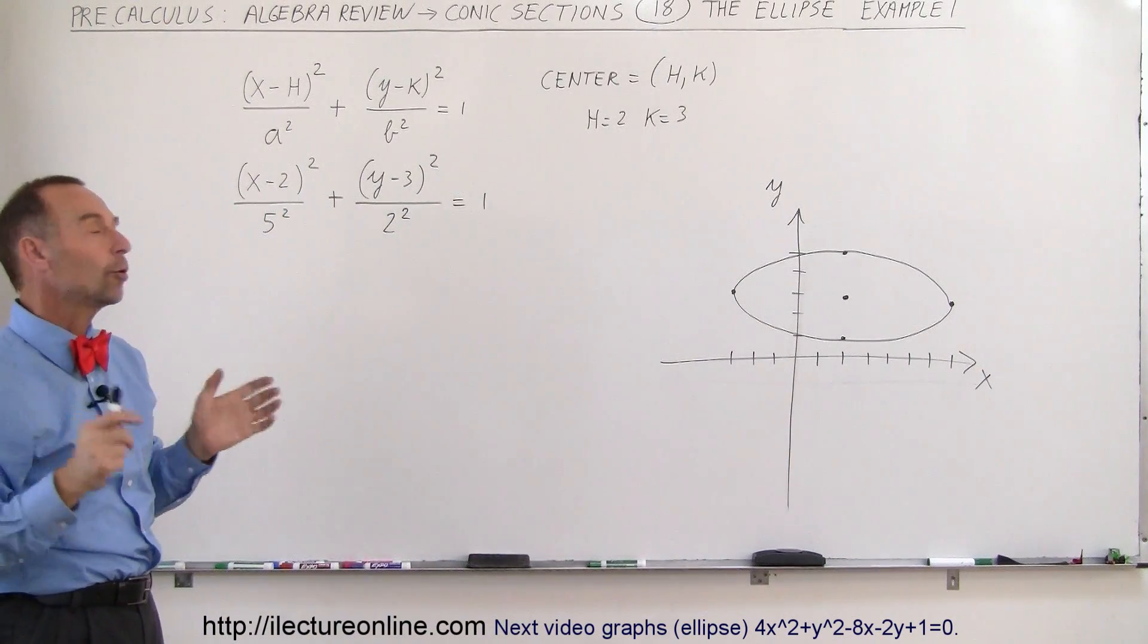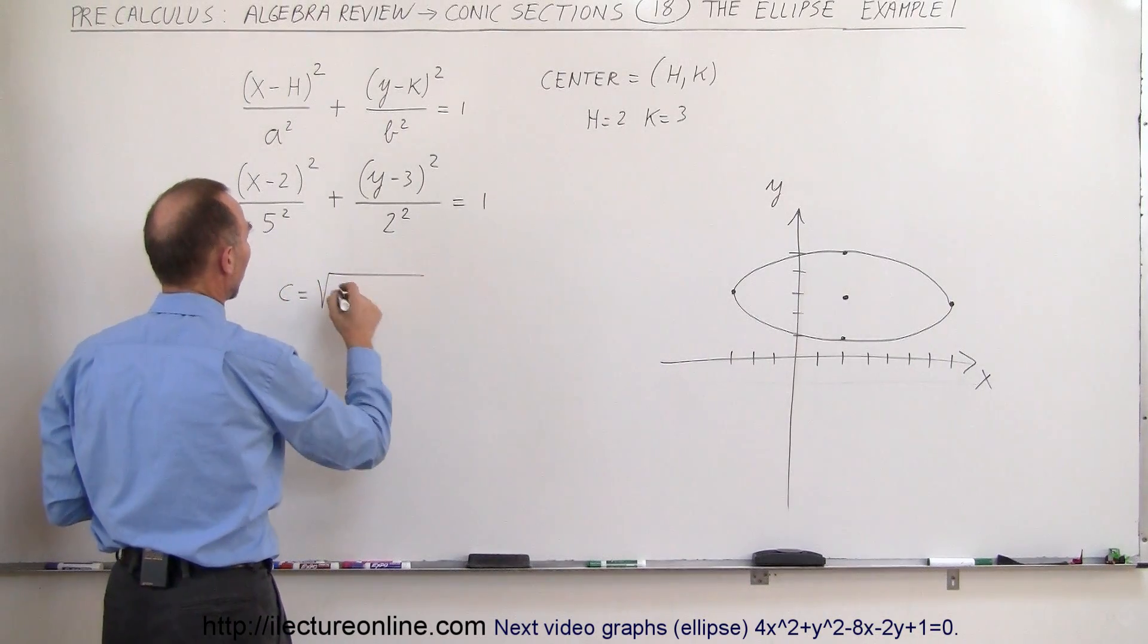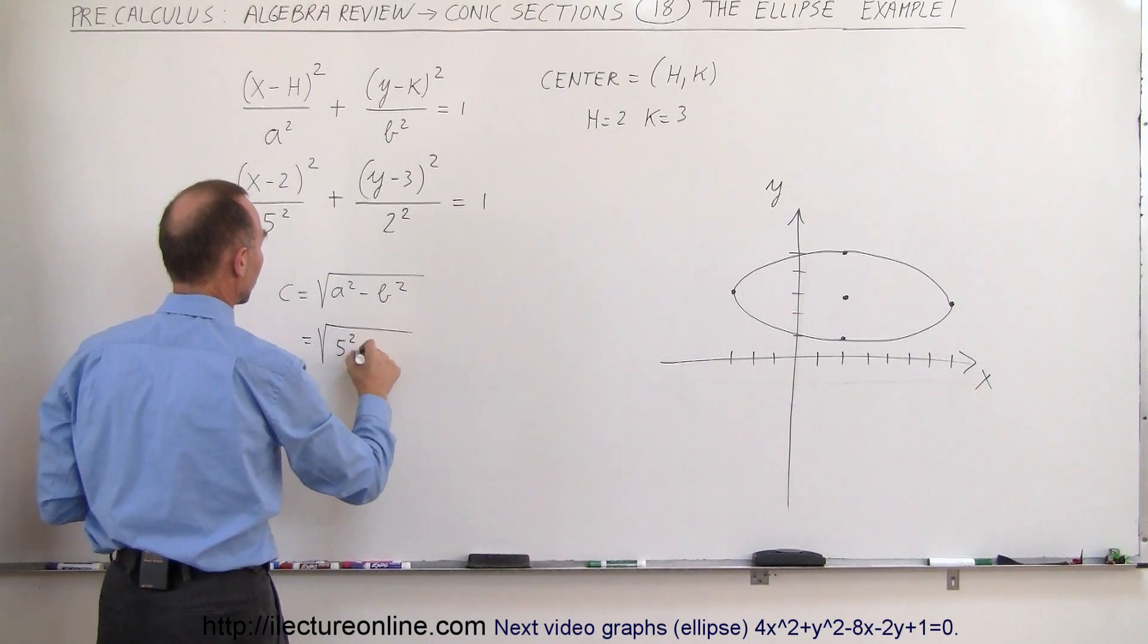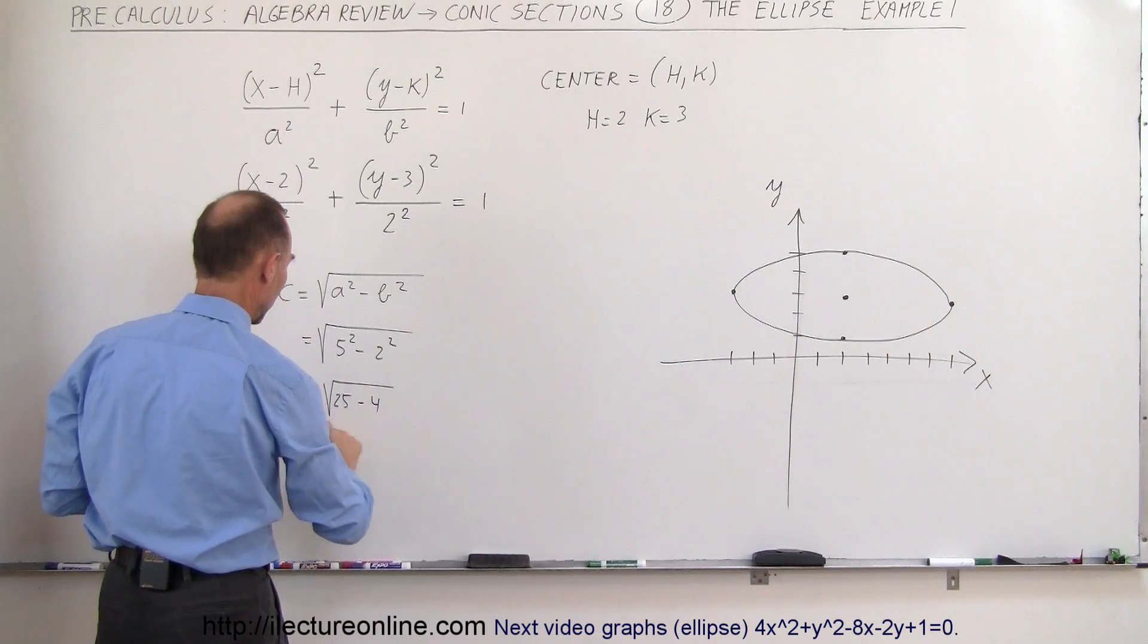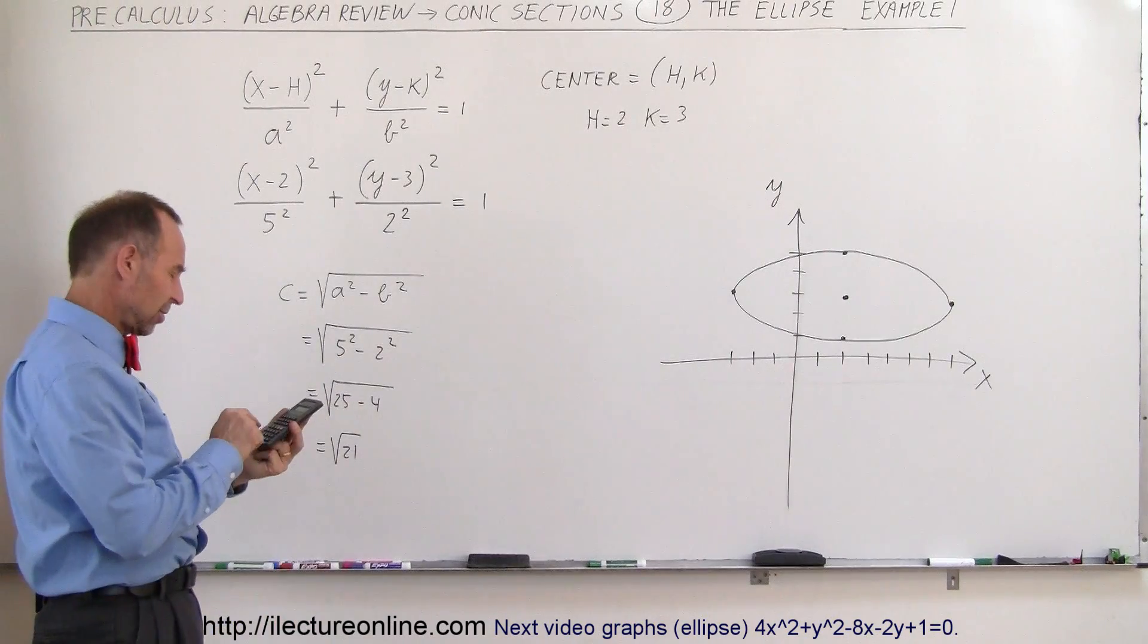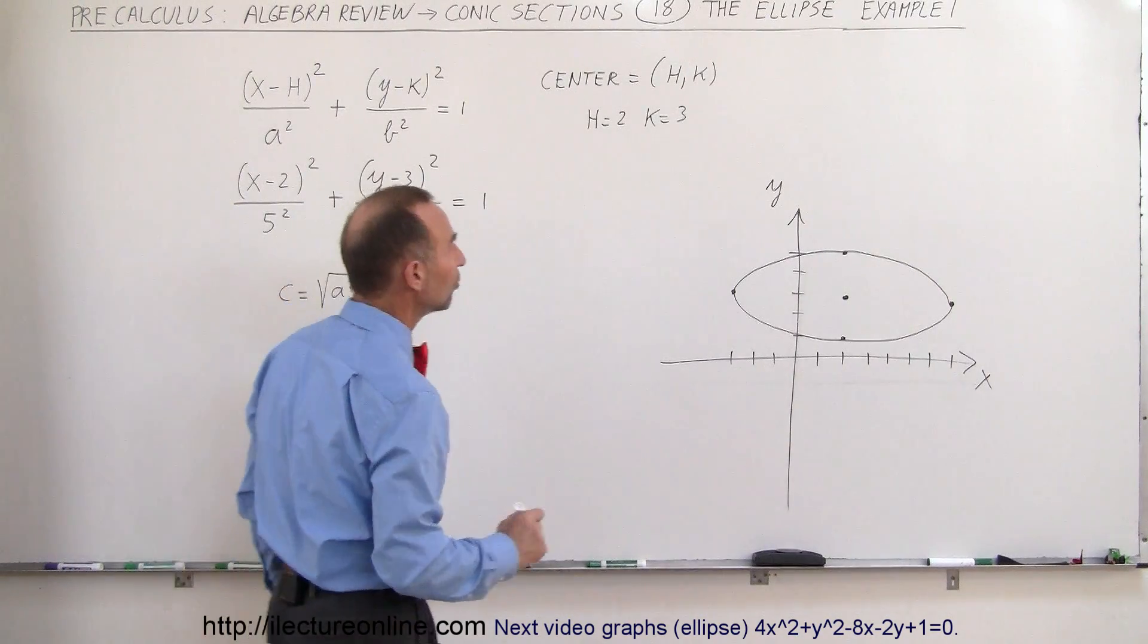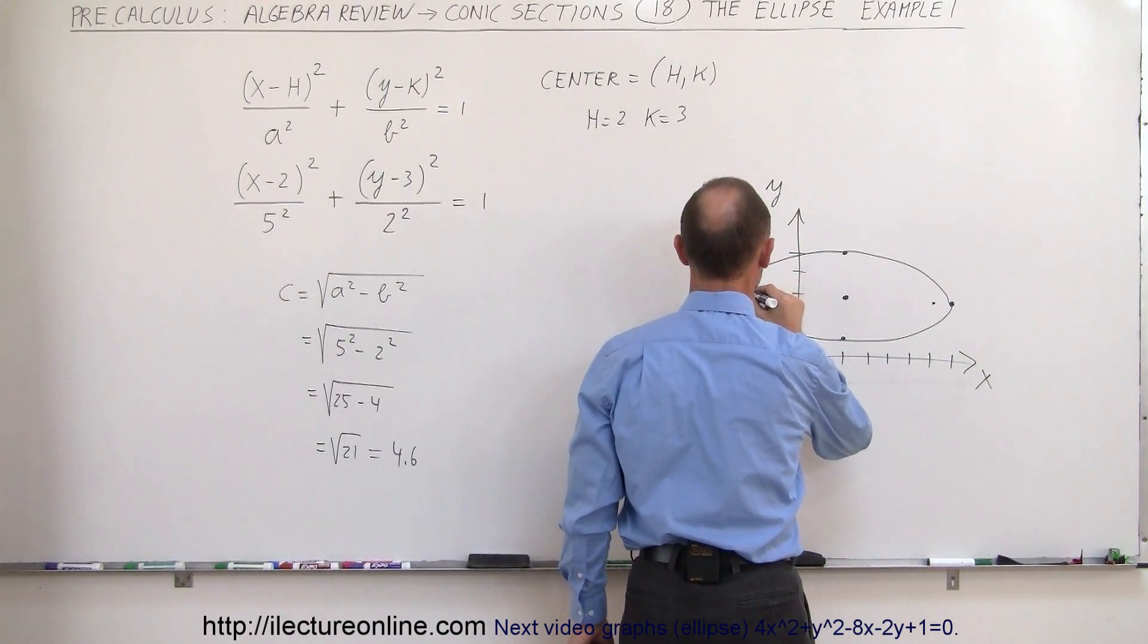And at this point, we have not yet found the foci. If we want to find the foci, we know that c is equal to the square root of, let's see here, that would be a squared minus b squared. So in this case, that would be the square root of 5 squared minus 2 squared, which is equal to the square root of 25 minus 4, which is equal to the square root of 21, which, let's see, the square root of 21 is about 4.5 or so, 21, take the square root, 4.6 approximately. So that's approximately equal to 4.6, which means that the foci would be over here and over here somewhere.